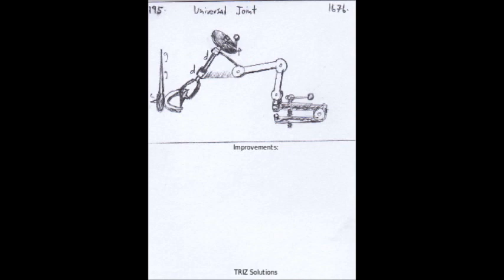Currently, most universal joints are made from steel or other metals, which can be heavy and prone to wear and corrosion. By exploring new materials, such as advanced composites or ceramics,